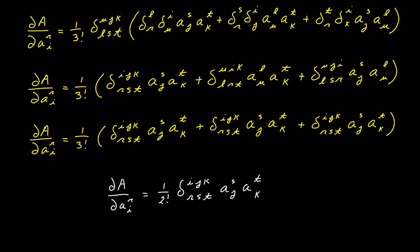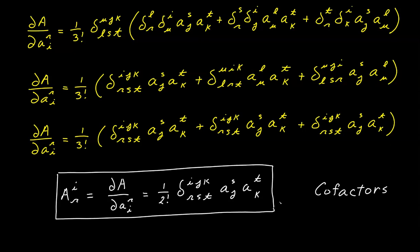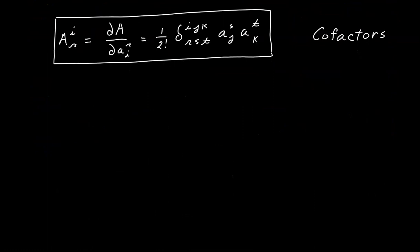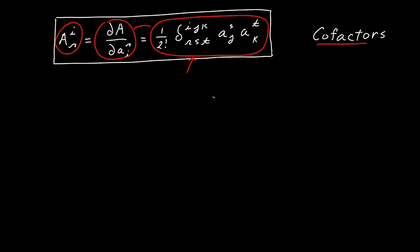What this gives us is a set of elements that we call cofactors, and we represent them with the capital letter A using indexes I and R. So what we've done is to define cofactors using this expression, and from this definition we have derived this relationship. Now, some authors actually use this expression as the definition for cofactors and use this definition to prove this relationship. In other words, these two things are equivalent to each other — you can use either one as the definition and prove the other from it.